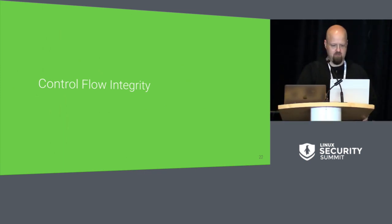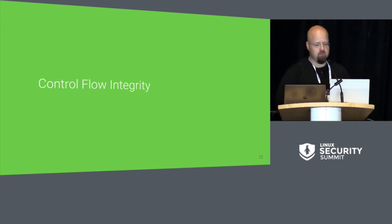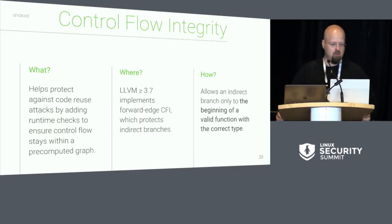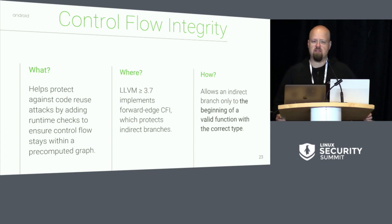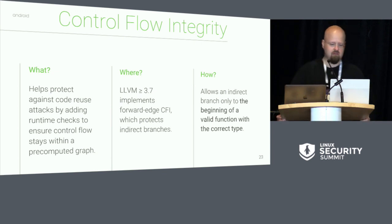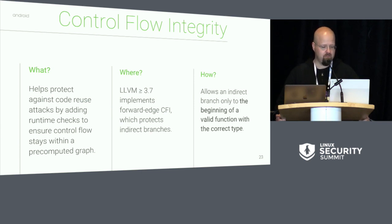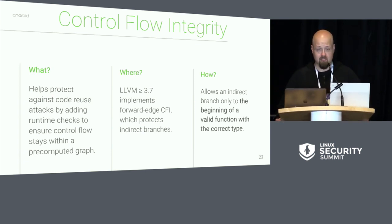I'm going to say a few words about CFI — control flow integrity — which is the latest mitigation we added to Android kernels in Android 9. CFI helps protect against code reuse attacks. It tries to accomplish this by adding runtime checks to ensure that the program's control flow stays within a pre-computed graph. LLVM's CFI implementation, which we use, focuses only on protecting the forward edge. For C programs, this basically means indirect branches. Luckily, the kernel has plenty of those, so it's a decent starting place.